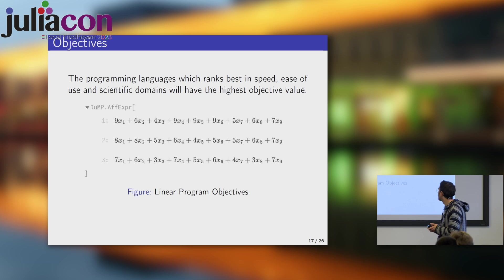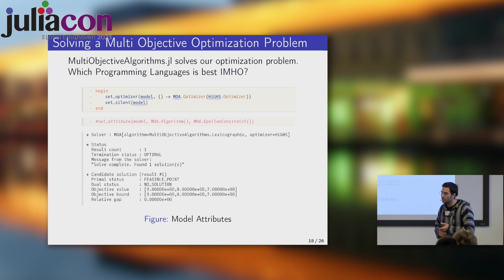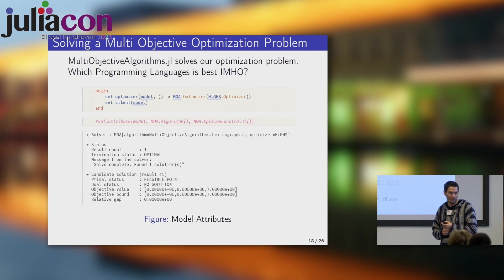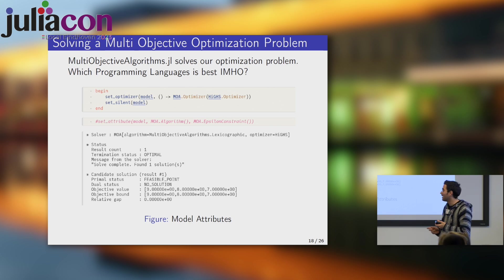We look at speed, ease of use, and scientific domain expressions. The objective function is to find the best language by maximizing the combined score across speed, ease of use, and scientific domain. We are using a multi-objective algorithm for solving a mathematical optimization problem with different objectives. The objectives are: I want to be fast, it should be easy to write, and it should have good scientific domains.